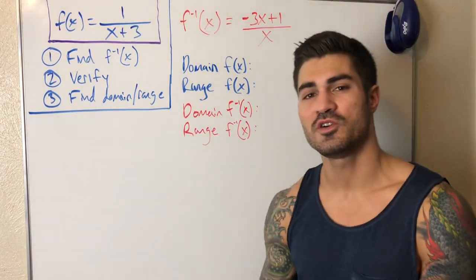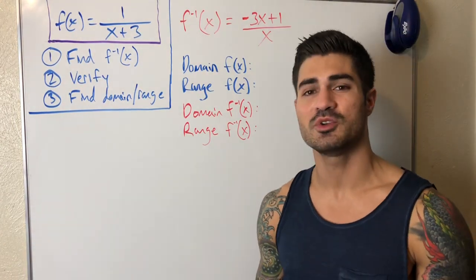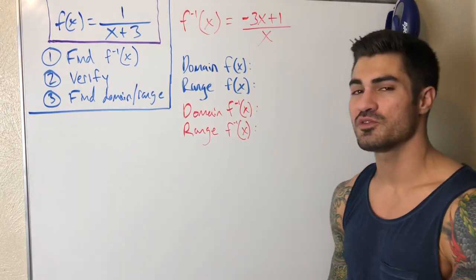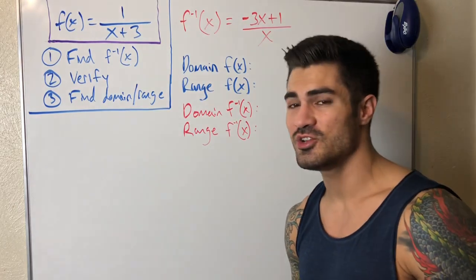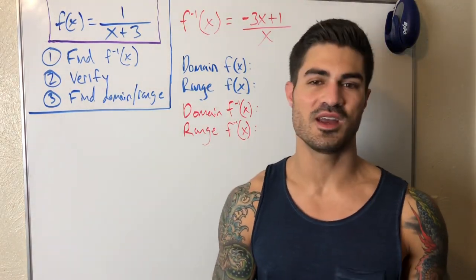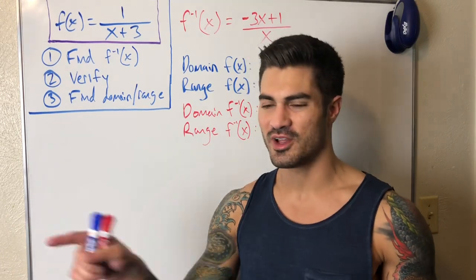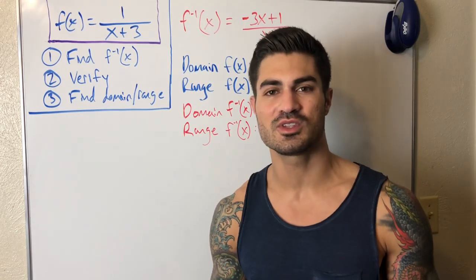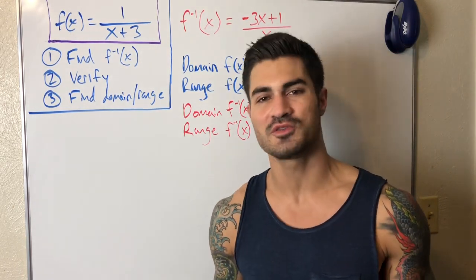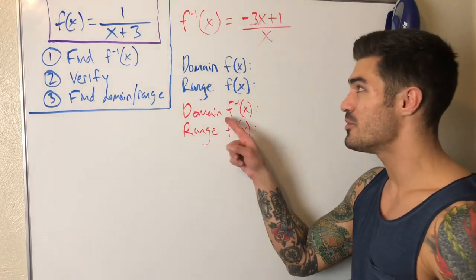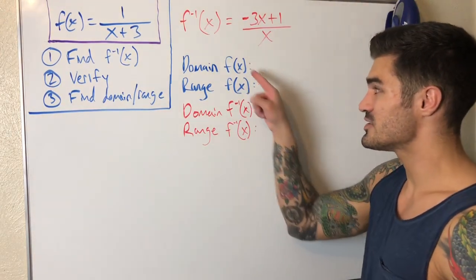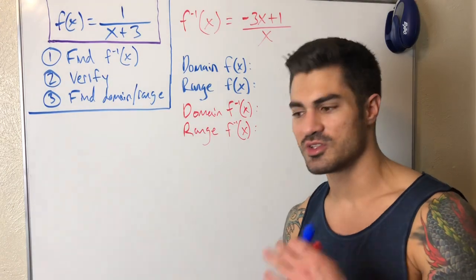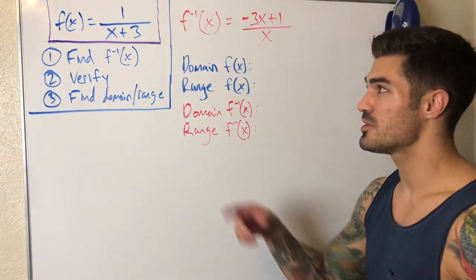Lastly, let's find the domain and range. Remember the relationship: the domain of the original equals the range of the inverse, and vice versa. My strategy is to find the domain of both functions, since domain is easier to find than range — you just look for values that make the denominator zero or create negatives under square roots. Find both domains, and you get both ranges by swapping.